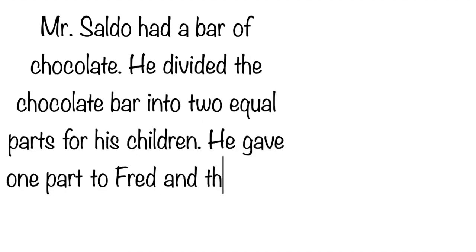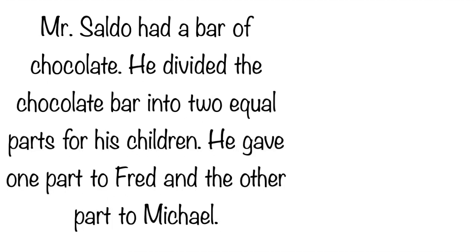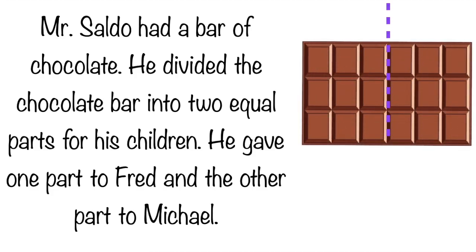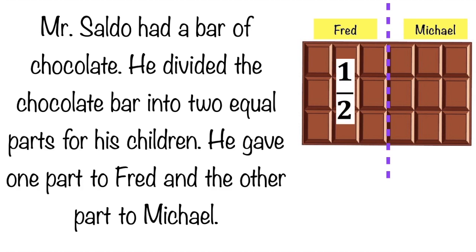Mr. Saldo had a bar of chocolate. He divided the chocolate bar into two equal parts for his children. He gave one part to Fred and the other part to Michael. When a whole is divided into two equal parts, one part is called one half of the whole. Since both Fred and Michael received one of two equal parts, they each received one half of the chocolate.